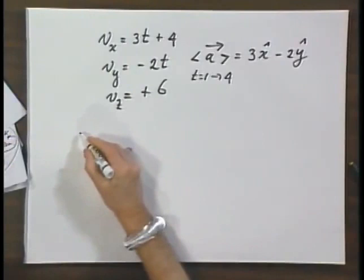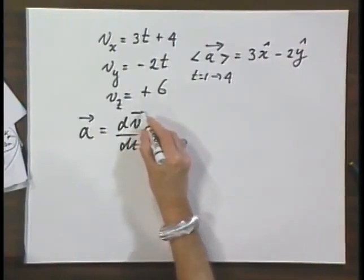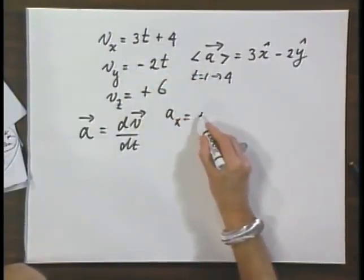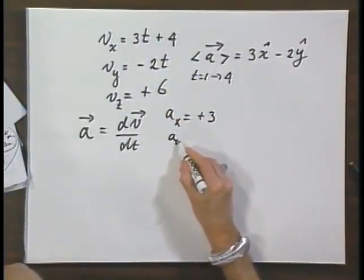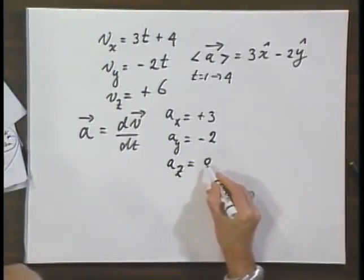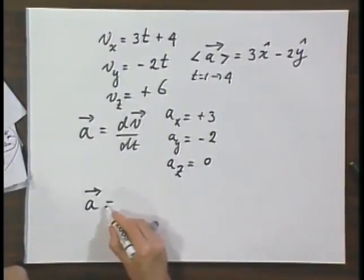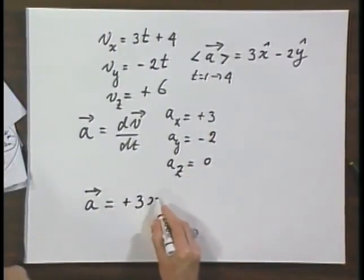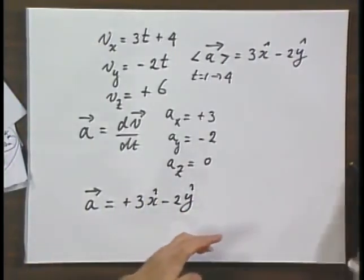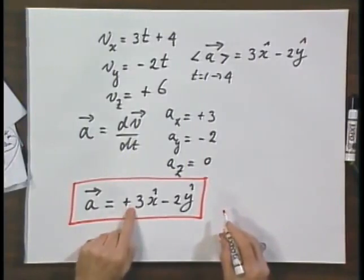Now let's calculate the instantaneous acceleration a, which is dv dt. A of x equals plus 3. A of y equals minus 2. A of z equals 0. So what is the instantaneous acceleration at any moment in time? That is plus 3 x hat minus 2 y hat. And so you see that the instantaneous acceleration is independent of time, so the acceleration is constant.